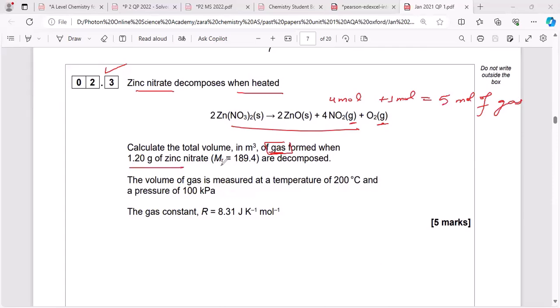Mass of zinc nitrate is given, its molar mass is given, so can I find the moles quickly? Yes. You know moles equals mass in grams divided by molar mass. So when I do this, I need a calculator. So 1.20 divided by 189.4, I will be getting 6.33 times 10 to the power minus 3. This is the moles of zinc nitrate.